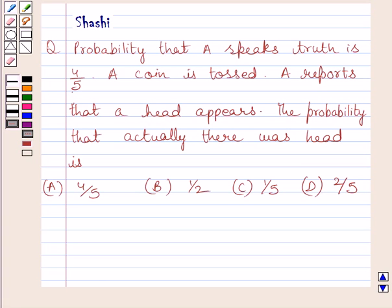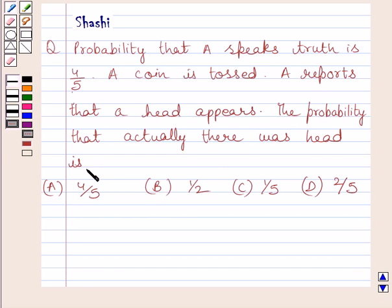The question says: Probability that A speaks truth is 4 upon 5. A coin is tossed. A reports that a head appears. The probability that actually there was a head is: A) 4 upon 5, B) 1 upon 2, C) 1 upon 5, D) 2 upon 5. We have to choose the correct answer from A, B, C, and D.